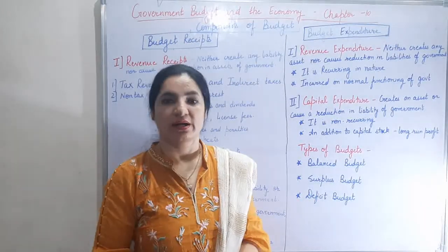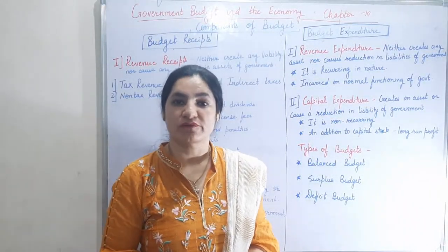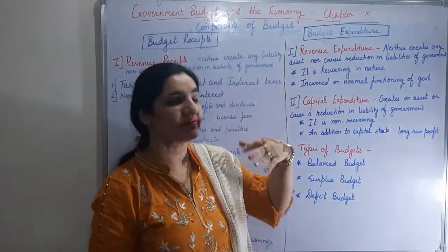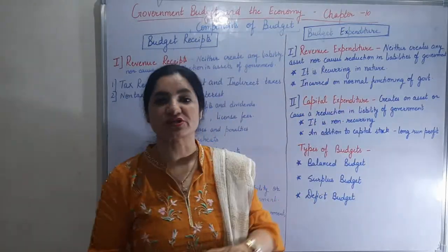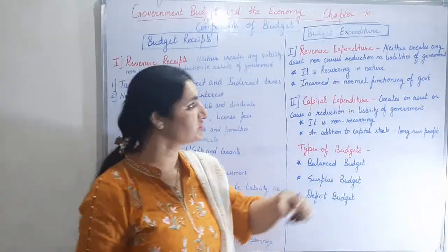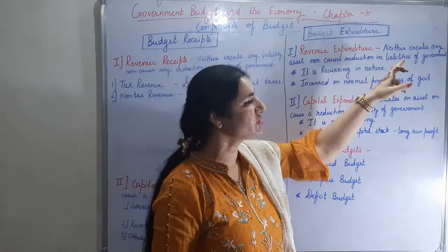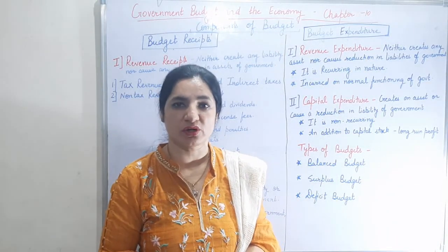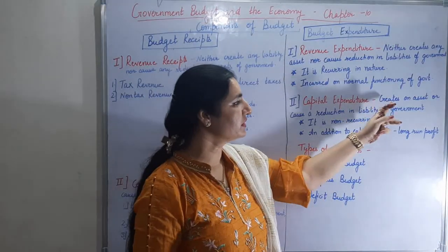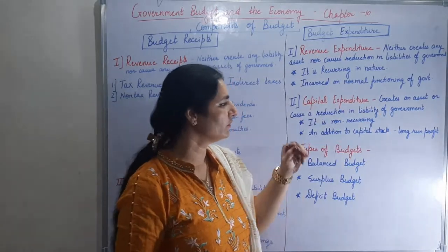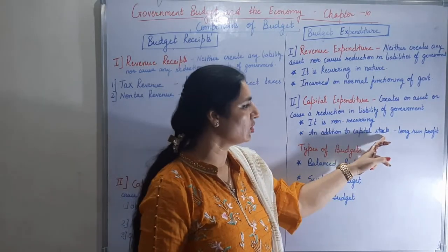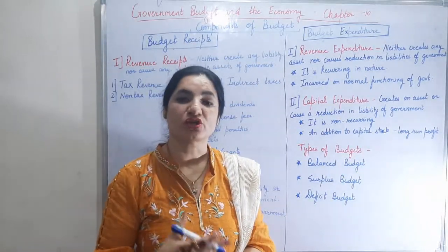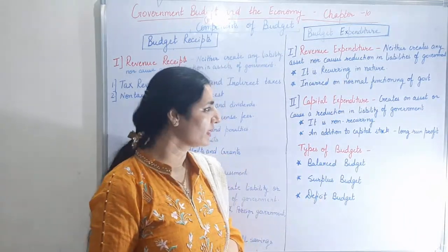Next is budget expenditure. Under budget expenditure, there are various heads on which the government makes expenditure, categorized into revenue expenditure and capital expenditure. Revenue expenditure is recurring in nature and is incurred on normal functioning of the government. It does not affect the balance sheet — it neither creates any asset nor causes a reduction in liabilities. For example, payment of salaries to employees of government departments. Capital expenditure creates an asset or causes a reduction in liability of the government. It is non-recurring and adds to capital stock, giving long-run profit. Examples include construction of government hospitals and government schools.